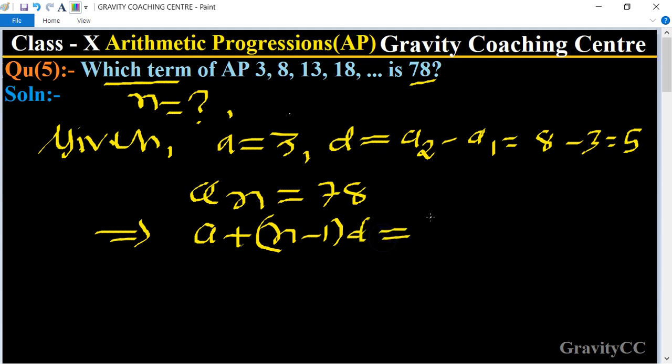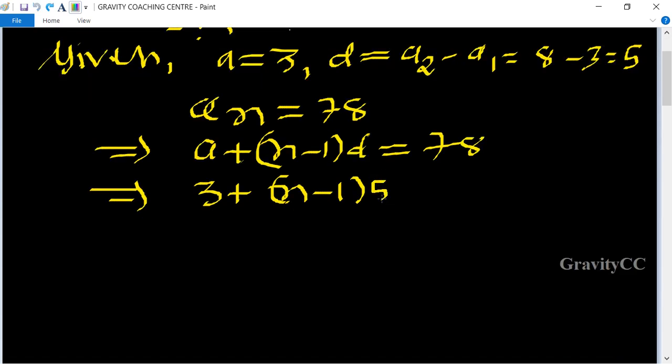Now we put the value of a and d. So 3 plus (n minus 1)5 equal to 78.